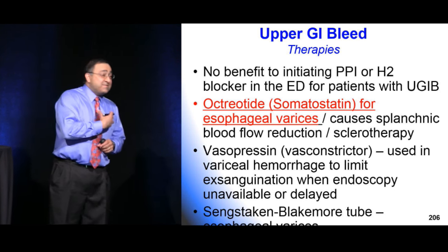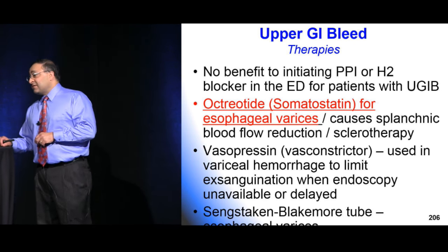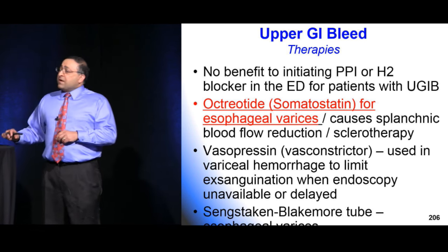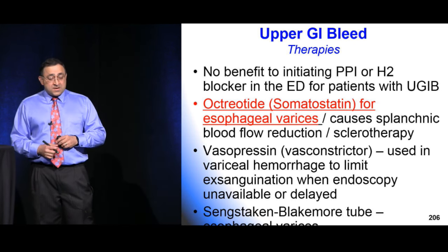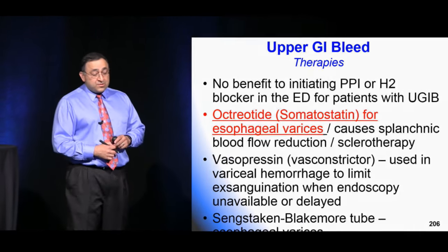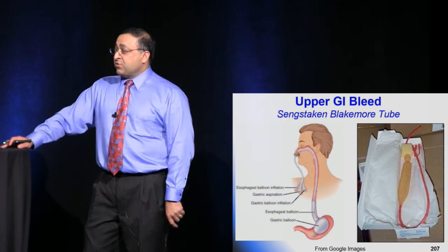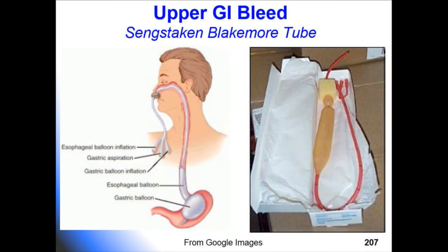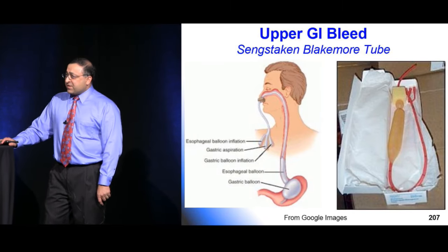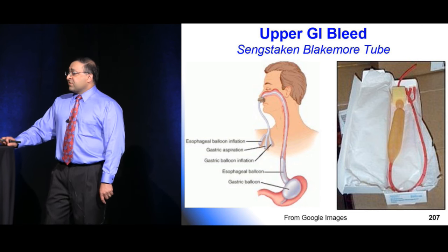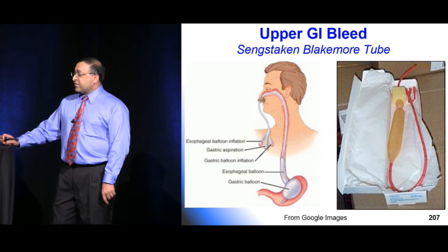Vasopressin was used for bad upper GI bleeds, especially variceal bleeds. It's a vasoconstrictor that shrinks bleeding vessels, but the major problem is it's not variceal-specific — it causes vasoconstriction everywhere, including the coronaries. So patients may develop cardiac ischemia. If you use vasopressin in someone with cardiac history, you must also start a nitroglycerin drip to maintain coronary patency.